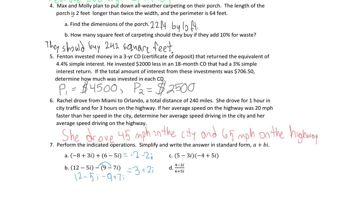For part C this is multiplication, so we have to FOIL. First: 5 times negative 4 is negative 20. Outer: plus 25i. Inner: negative 3i times negative 4 is 12i. Last: negative 3i times 5i is negative 15i squared. Combining: negative 20, then 25i plus 12i is 37i, and negative 15i squared equals negative 15 times negative 1 which is plus 15. So negative 20 plus 15 is negative 5, giving us negative 5 plus 37i.